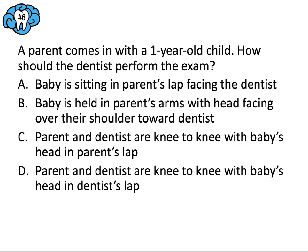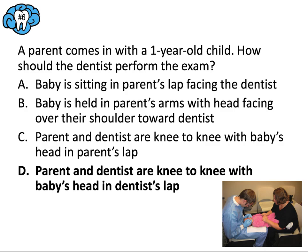Question number six: a parent comes in with a one-year-old child. How should the dentist perform the exam? This is the classic knee-to-knee exam question. If the child is less than two years old, you perform a knee-to-knee exam — that rules out answer choices A and B. The correct orientation is to have the baby's head laying on the dentist's lap so they can face the parent, giving the dentist the best access to the mouth. The answer is C.